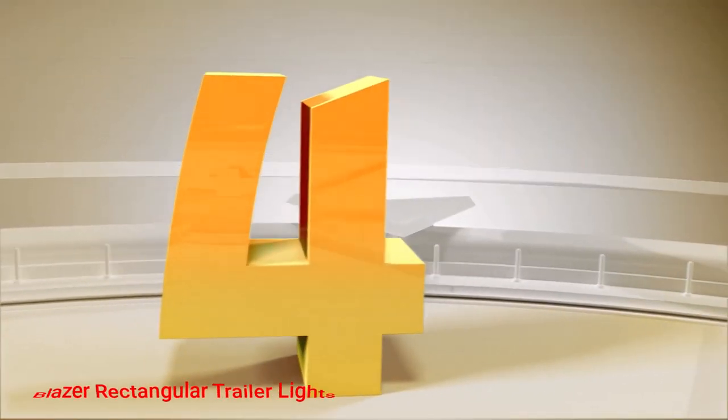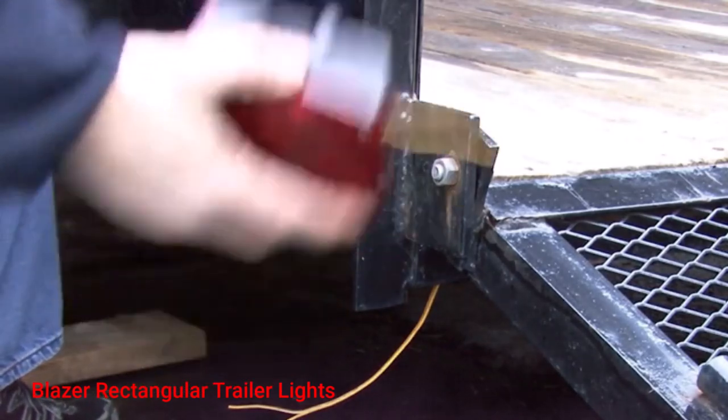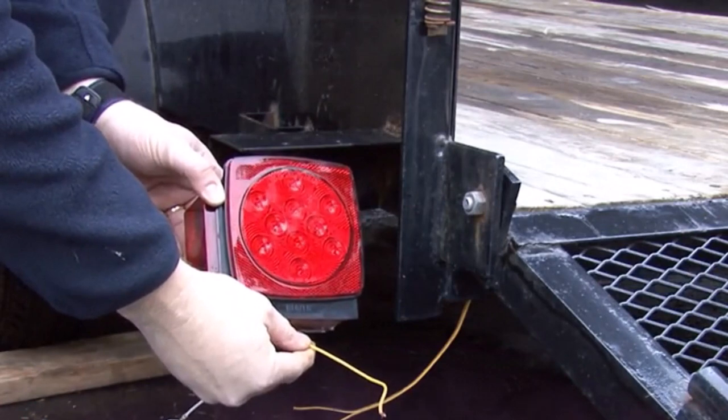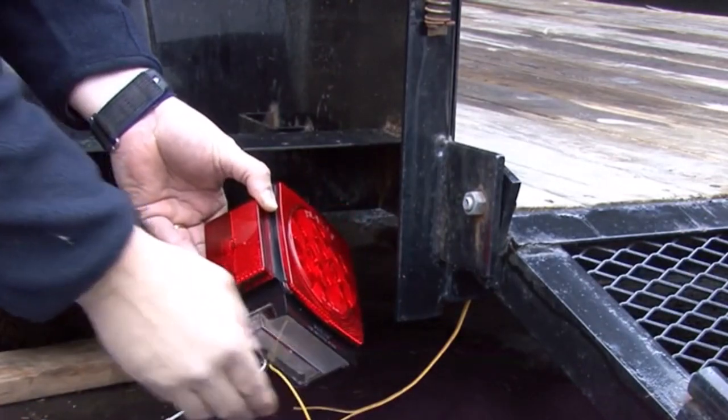Number 4: Blazer Rectangular Trailer Lights. These low-profile trailer lights use incandescent bulbs instead of LEDs. Don't let this turn you away though—they are well made, with plenty of brightness.